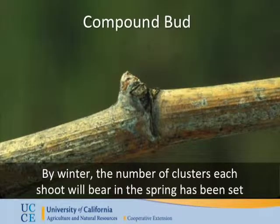It's very early information that gives you a lot of data about how many clusters you'll have per each cane or each spur, depending on how many canes and spurs your vine carries. You'll have a general idea of how many clusters you will have for next year — whether it's going to be a good crop or less crop — giving you a general sense of what your crop size is going to be.